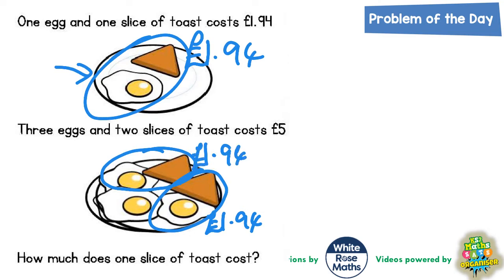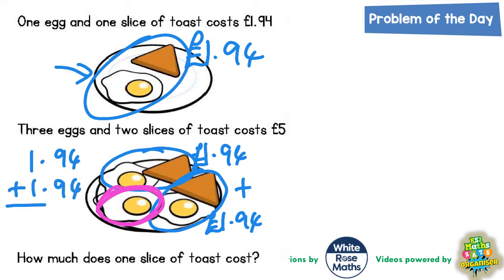Now the only thing extra on the plate that we've not talked about is this extra egg here. What we could do is work out what two lots of £1.94 are added together. So £1.94 plus £1.94: 4 plus 4 is 8, 9 plus 9 is 18 — put the 8 in, carry the 1 — 1 plus 1 plus 1 is 3. So far on the plate we've accounted for £3.88.